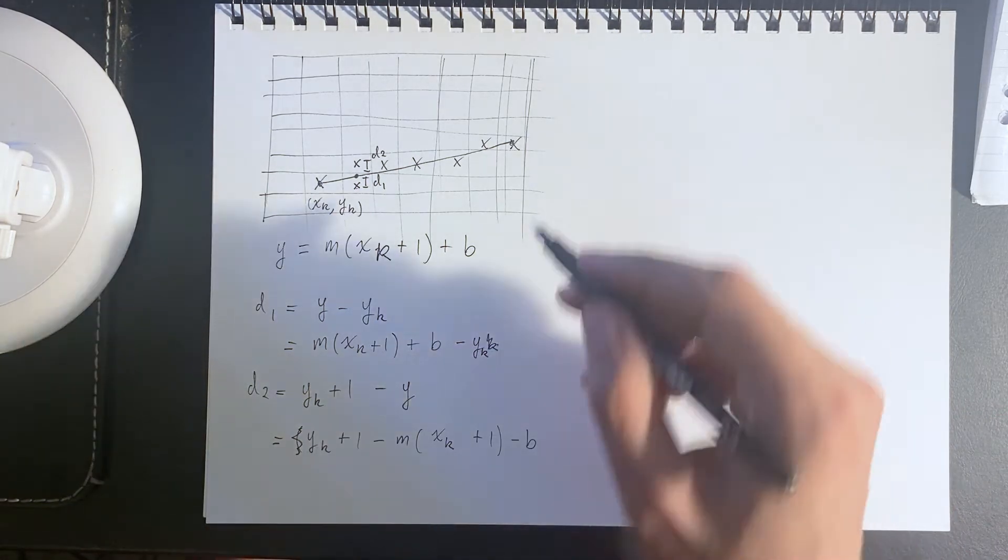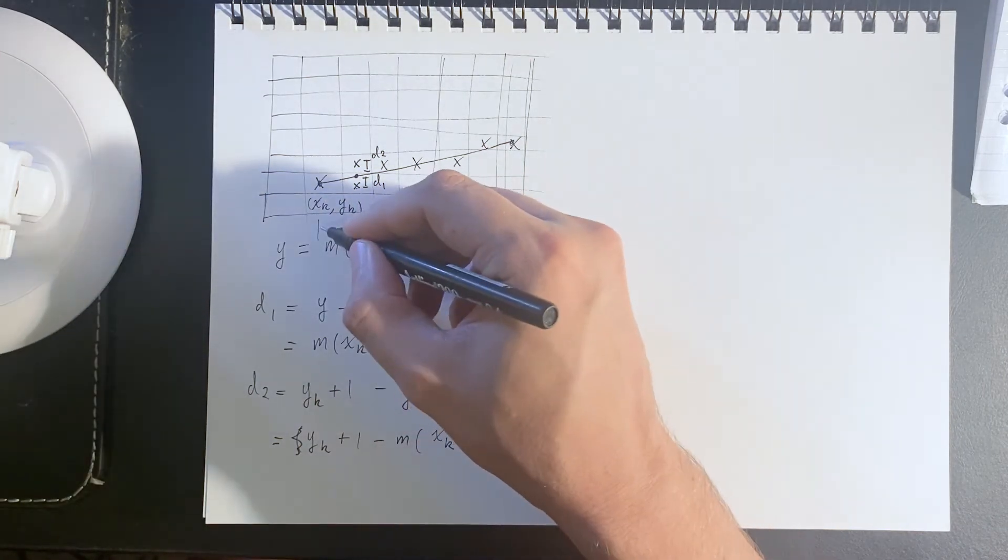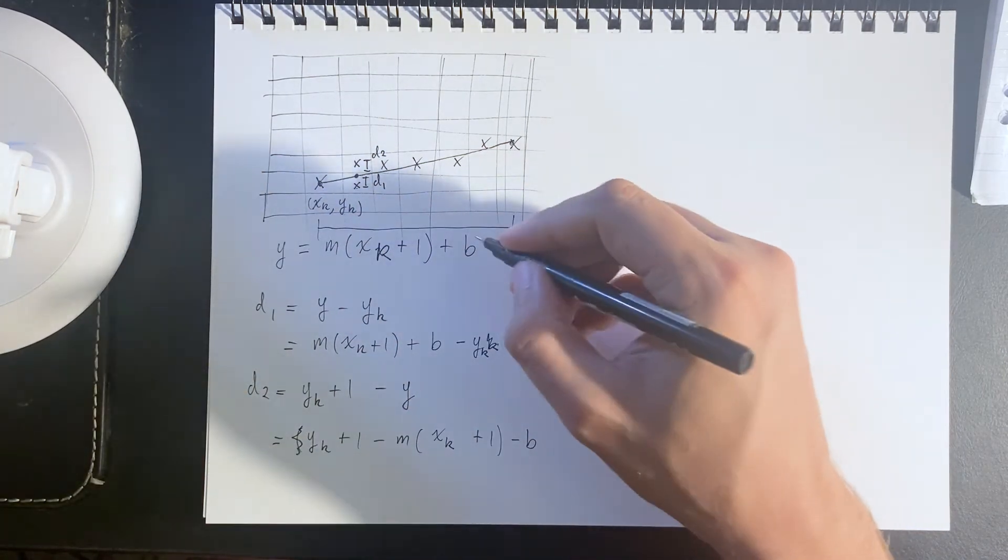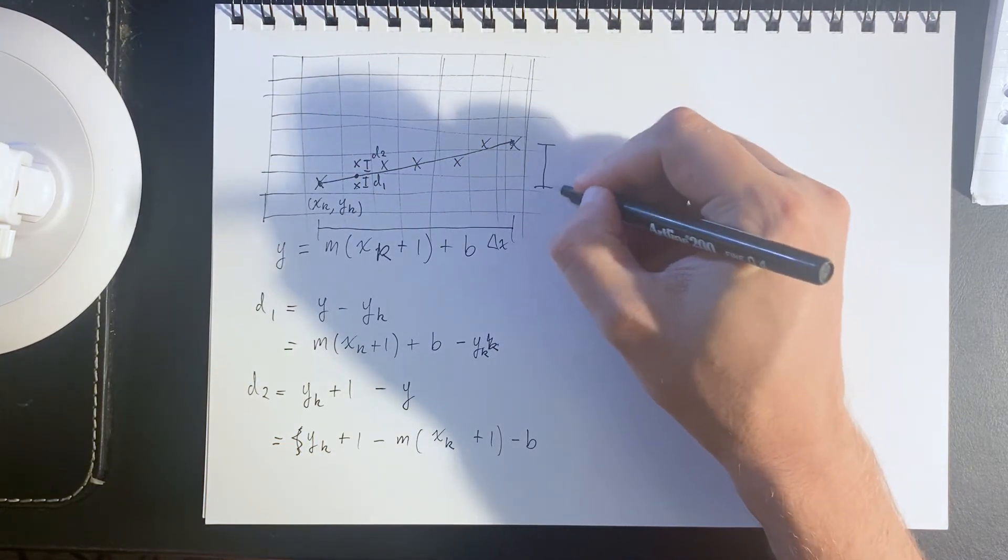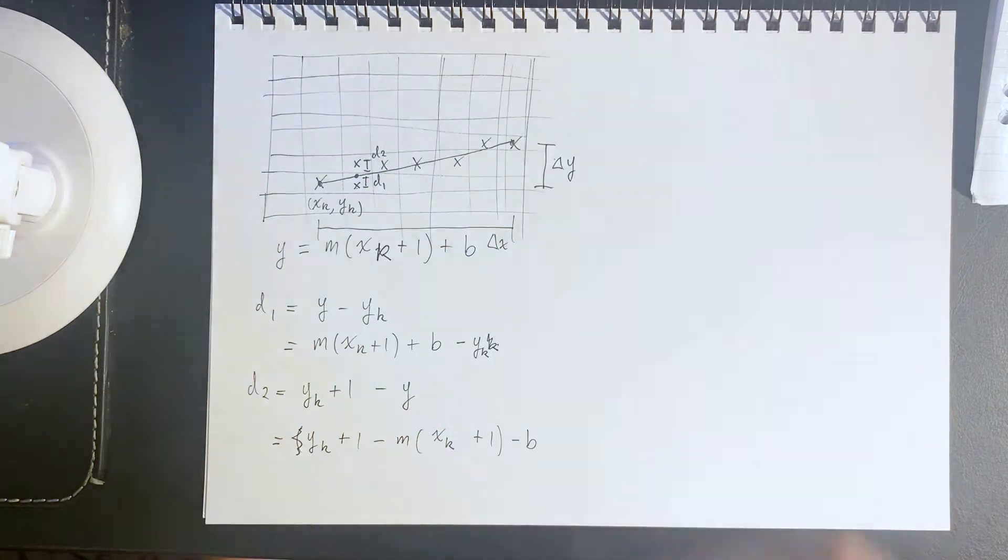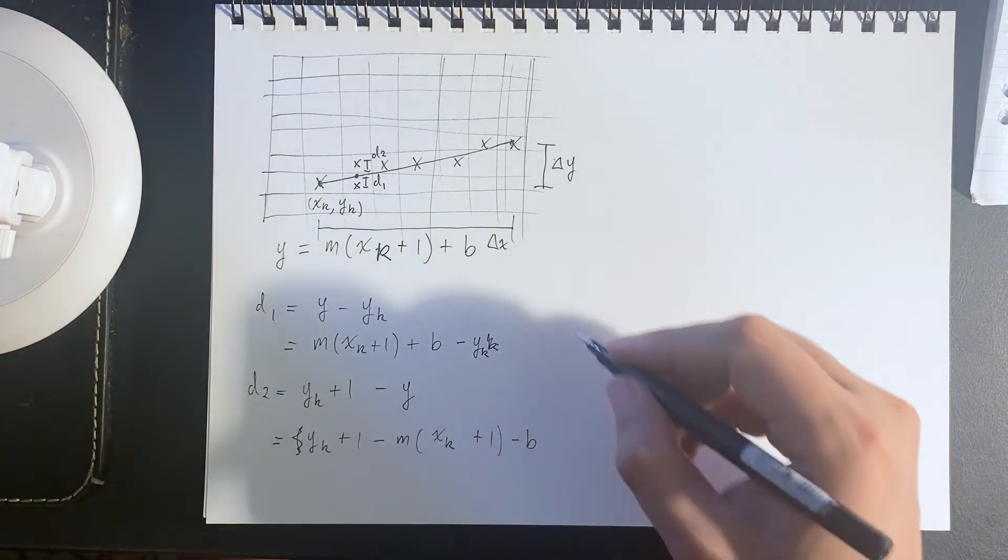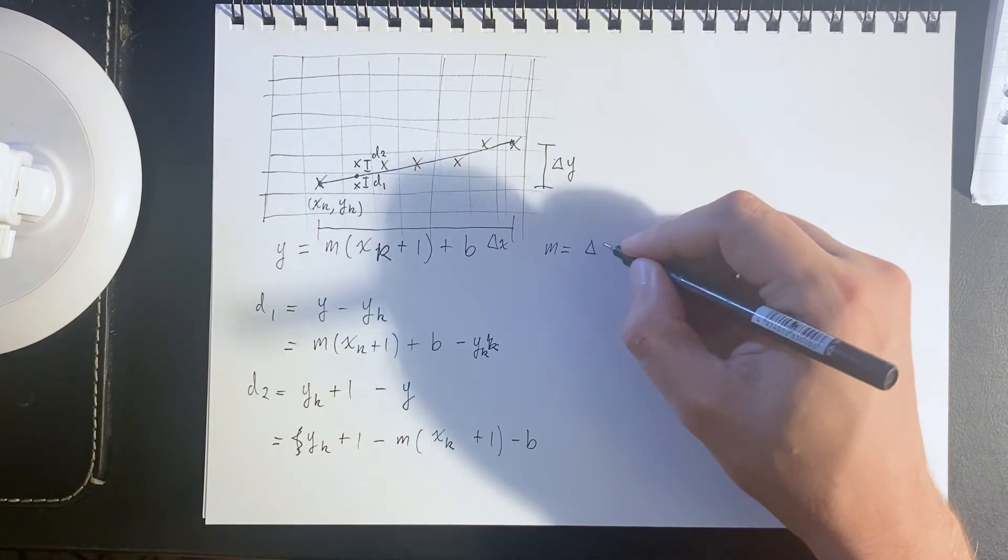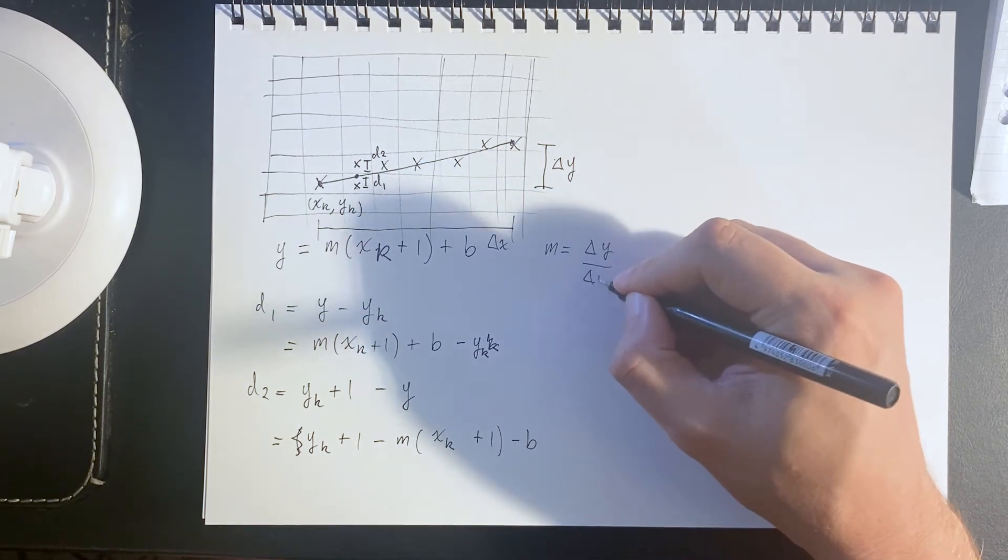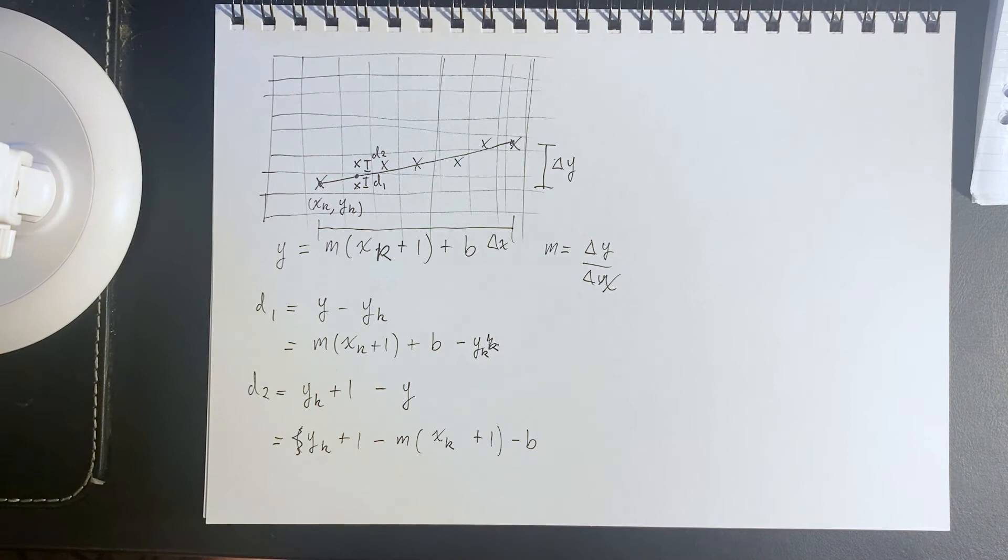If we have two points here, then we actually also have a finite difference. We have a delta x and a delta y, and so we can say the slope is rise over run, delta y over delta x.